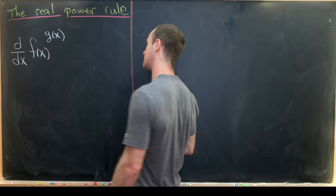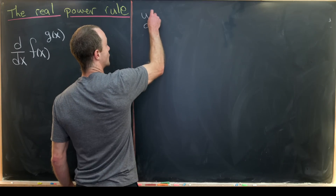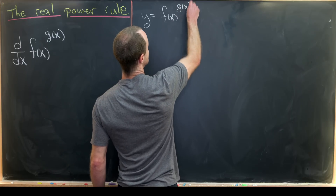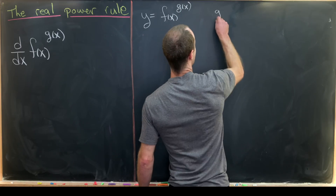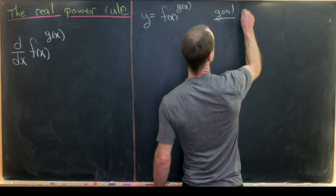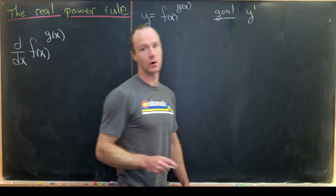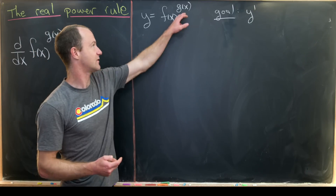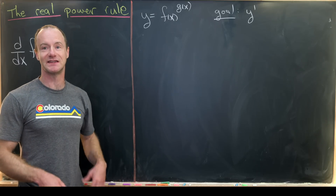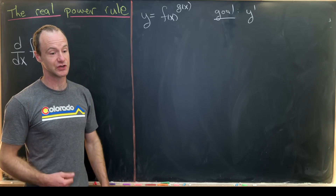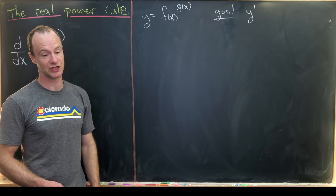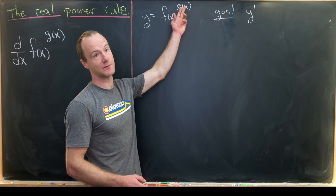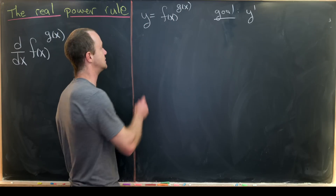Let's get started. We're going to begin by setting y equal to f(x) to the g(x). Our goal is to determine y prime, or dy/dx. Since we've got a function in the exponent, this motivates us to take the log of both sides and use so-called logarithmic differentiation, because a logarithm will bring the function down from the exponent.